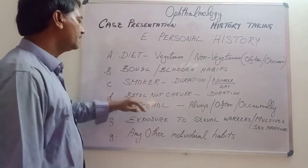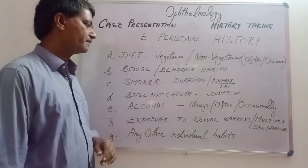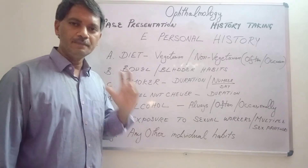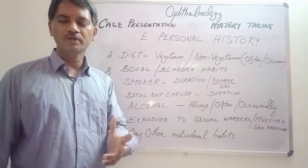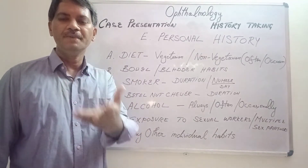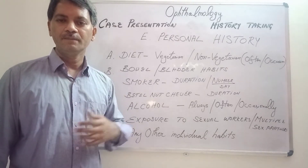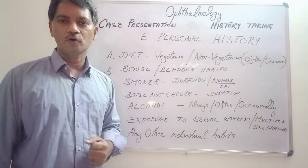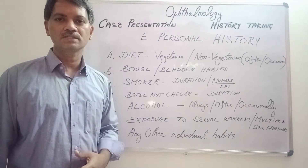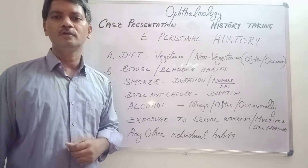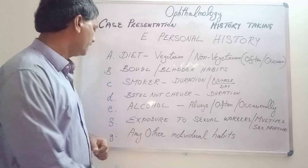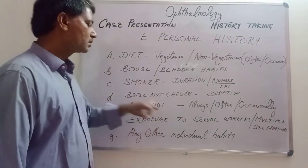Next is betel nut chewing or tobacco chewing. If the patient is not smoking, sometimes they may have a habit of betel nut chewing. Betel nut chewing can also lead to oral carcinomas and can once again lead to toxic amblyopia.